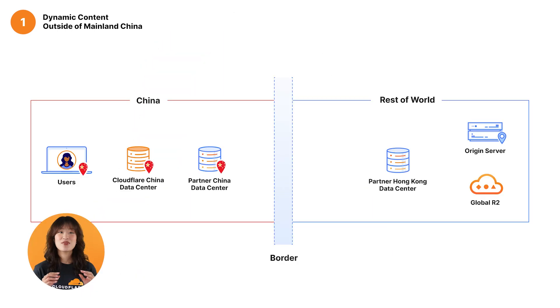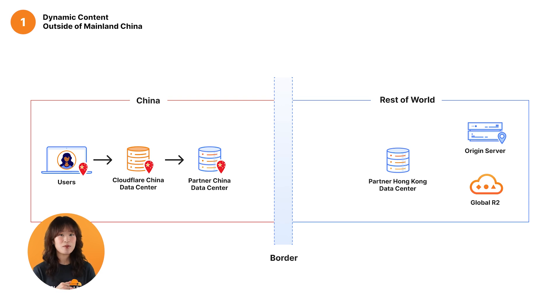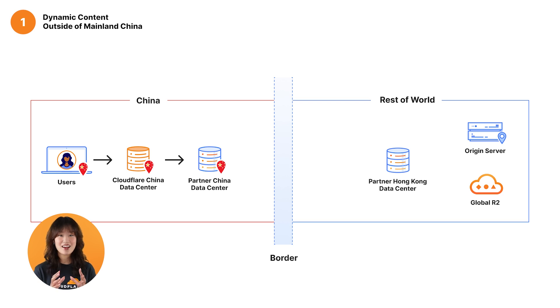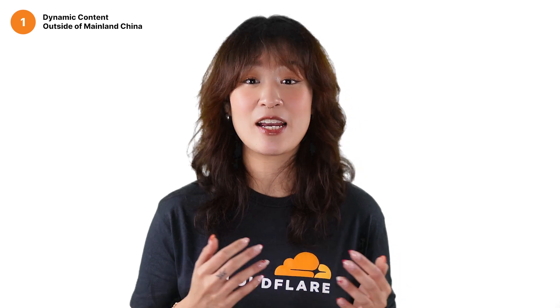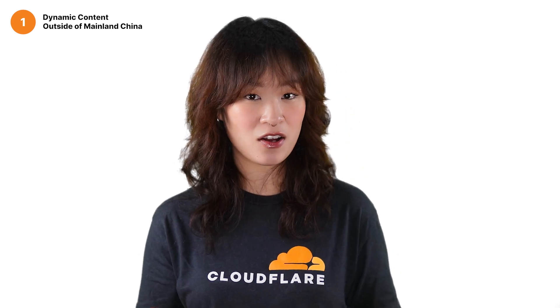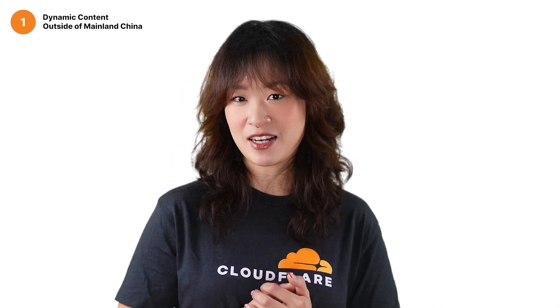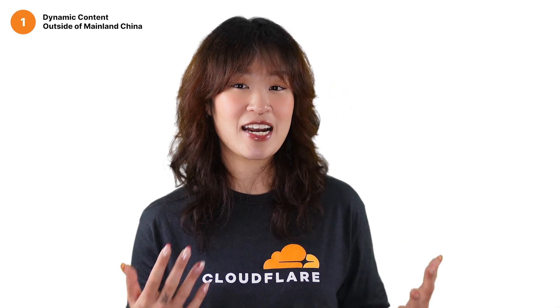Here's how it works. Traffic received from our China network data centers is routed to our premium data centers, which have global acceleration privileges designed to handle dynamic traffic with ease. This includes typical use cases like web API calls, as well as more complex scenarios such as dynamic traffic management or multi-origin configurations.